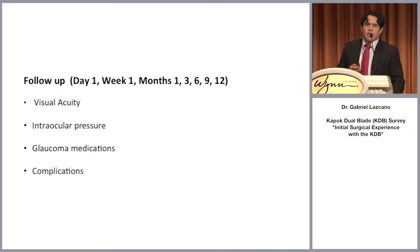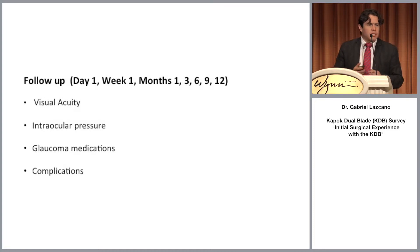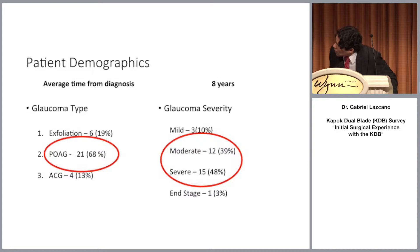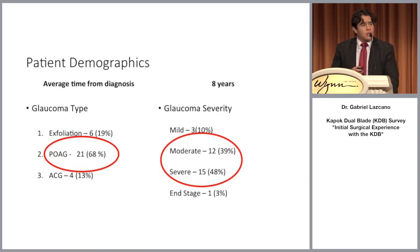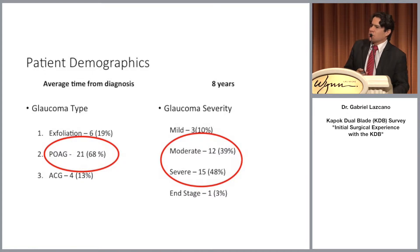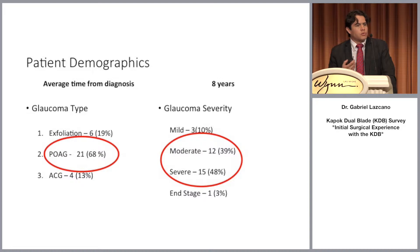Likewise, we have this data for the follow-up, but as this study has not been completed for the one-year period, the results I'm going to present are preliminary. To this day, we have 31 patients who underwent trabeculotomy with the KDB, with primary open-angle glaucoma being the most common diagnosis in 68% of the cases. We also have exfoliation and angle-closure glaucoma.